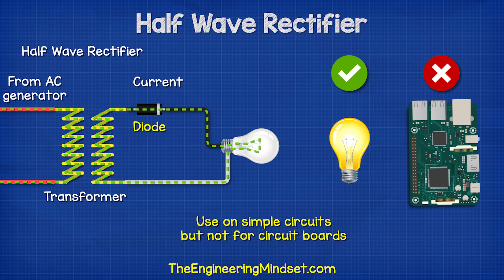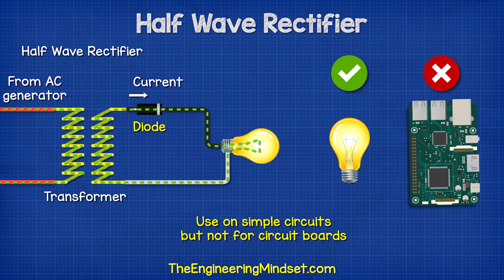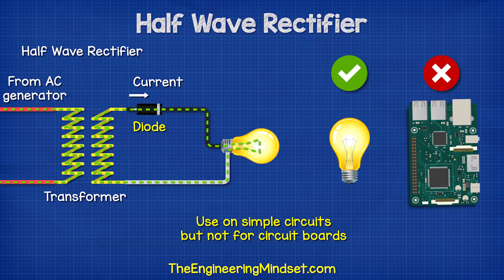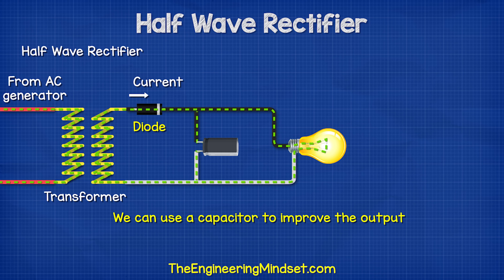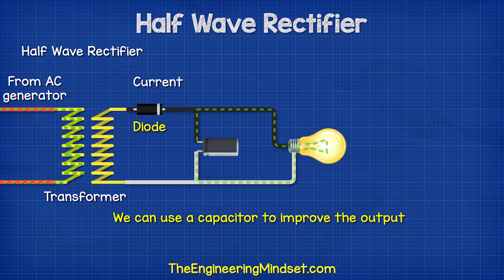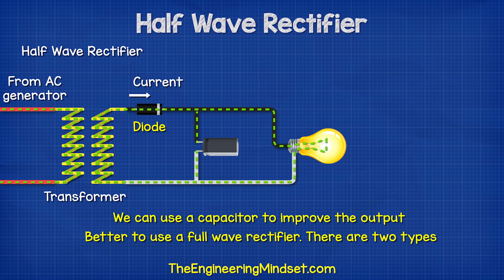We can use this for simple circuits, such as lighting, or perhaps charging some simple batteries. But we can't use this for electronics, as the components need constant power — otherwise, they will not work correctly. We can add a capacitor in parallel with the load to improve the output. A better improvement is to use a full-wave rectifier.